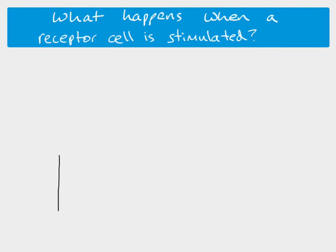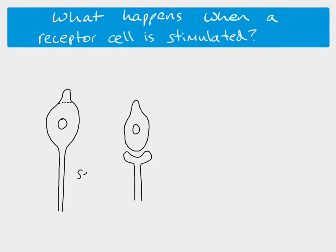When a receptor cell is stimulated, there are actually two types of receptors. In one example, the whole structure is the sensory neuron - this is the tip of the sensory neuron, and this very tip is the receptor area, the receptor zone. But perhaps more common is where you have a sensory neuron and then a separate receptor cell - so the sensory neuron has a synapse, and then there's a specialized receptor cell.